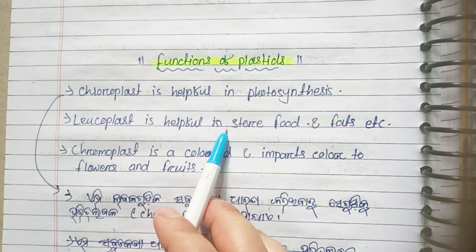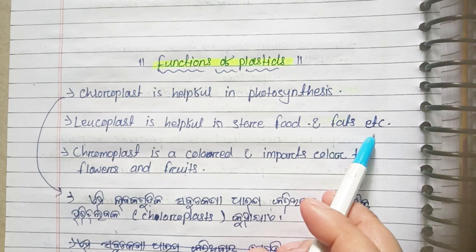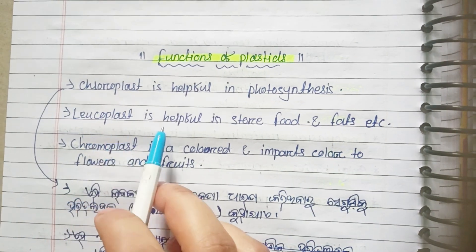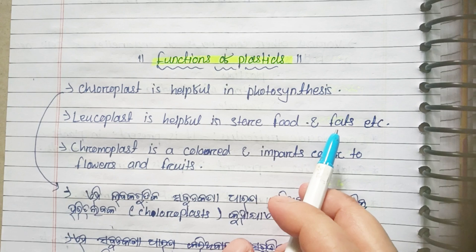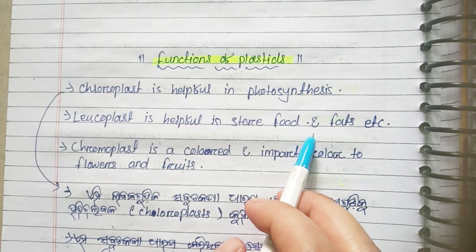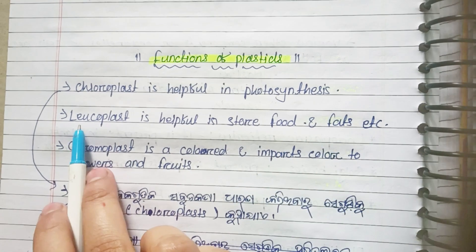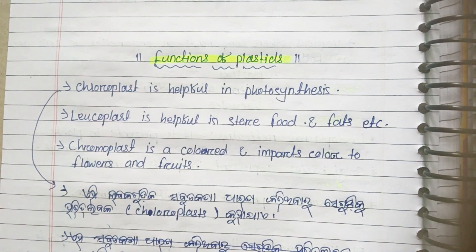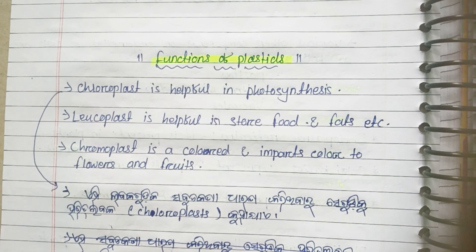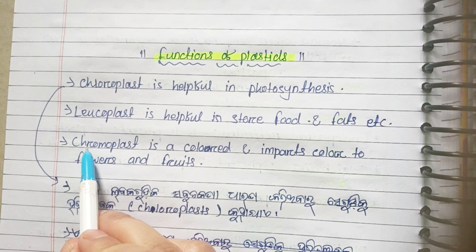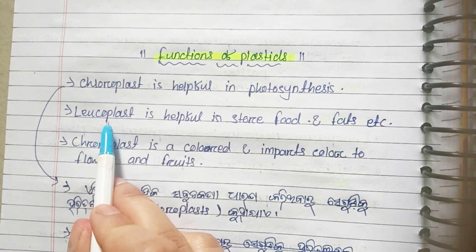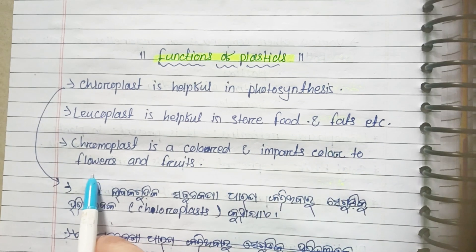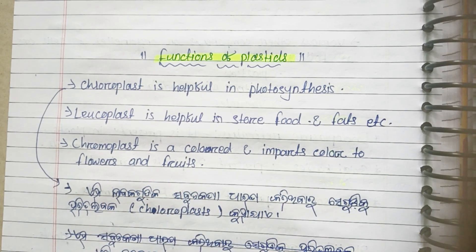Leucoplasts help store food and fat. They are colorless. Chromoplast is colorful and it imparts color to flowers and fruits.